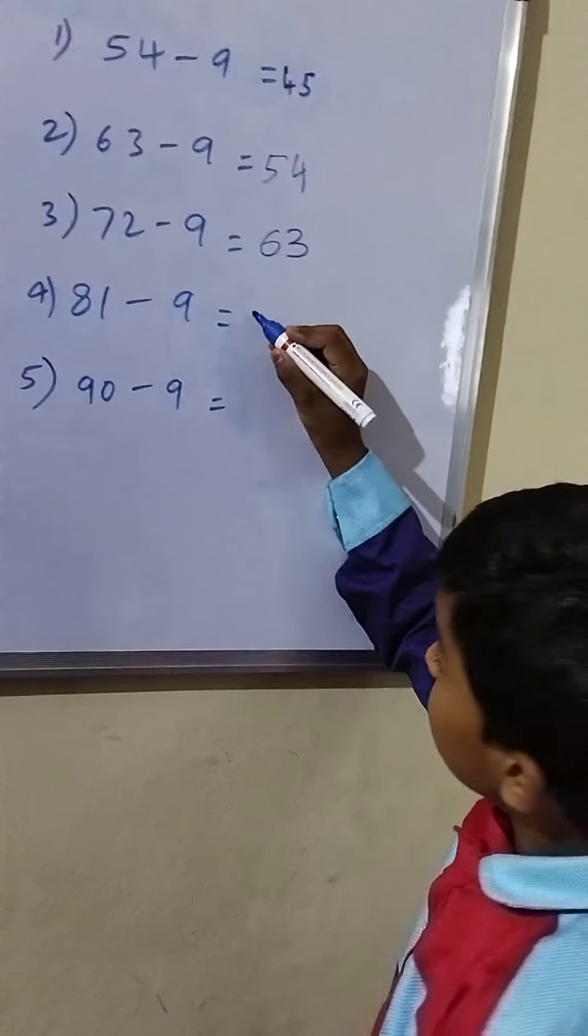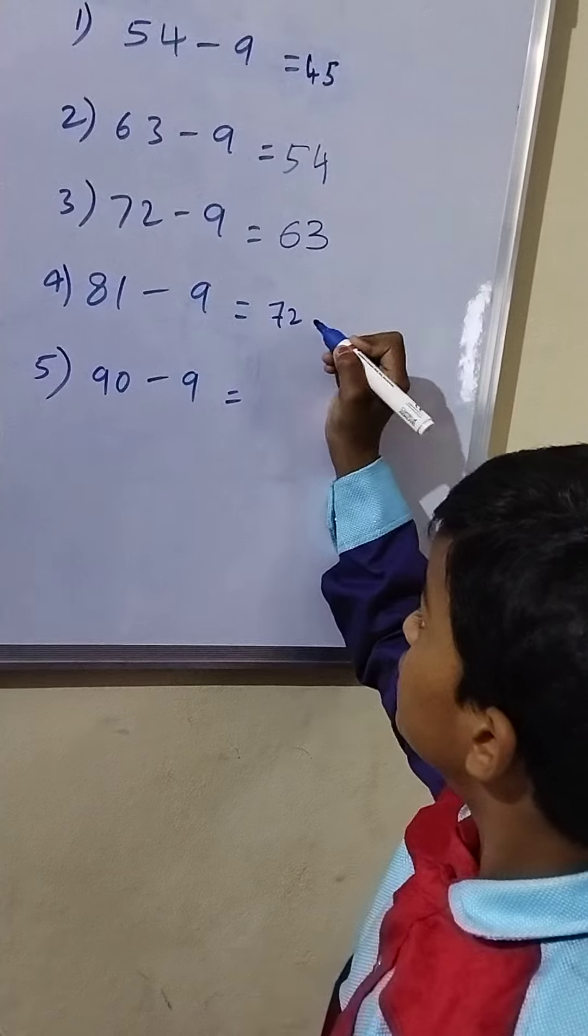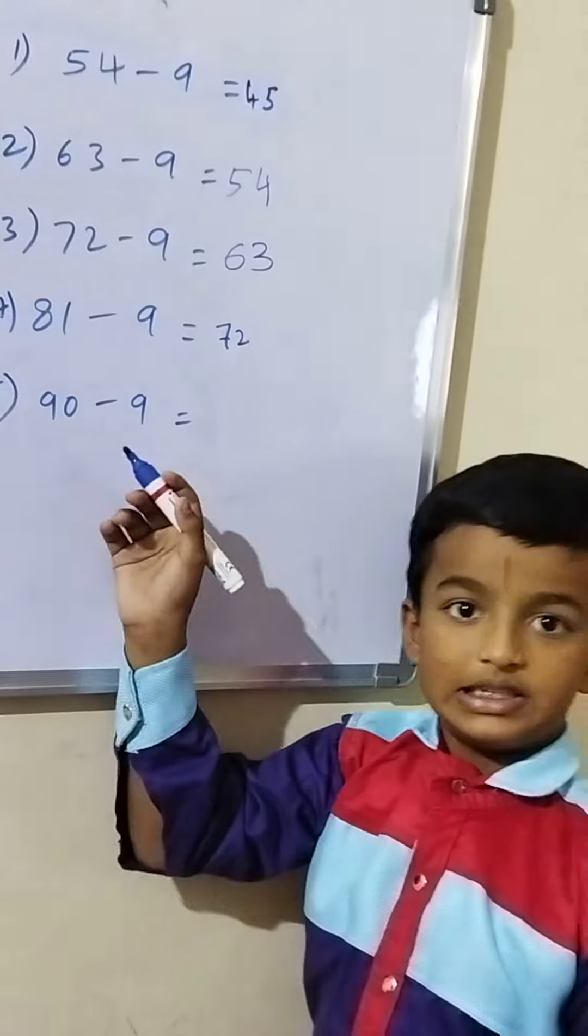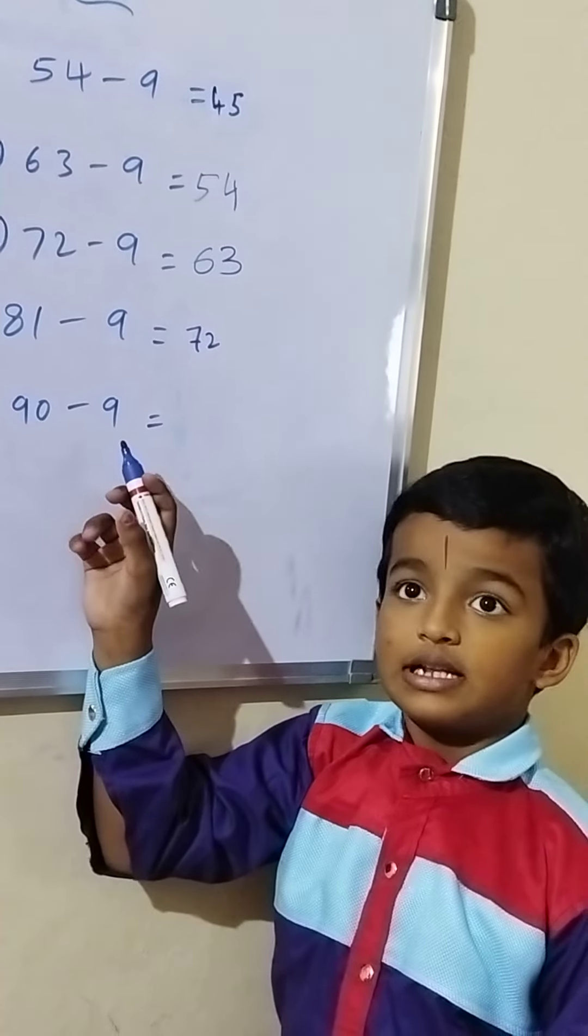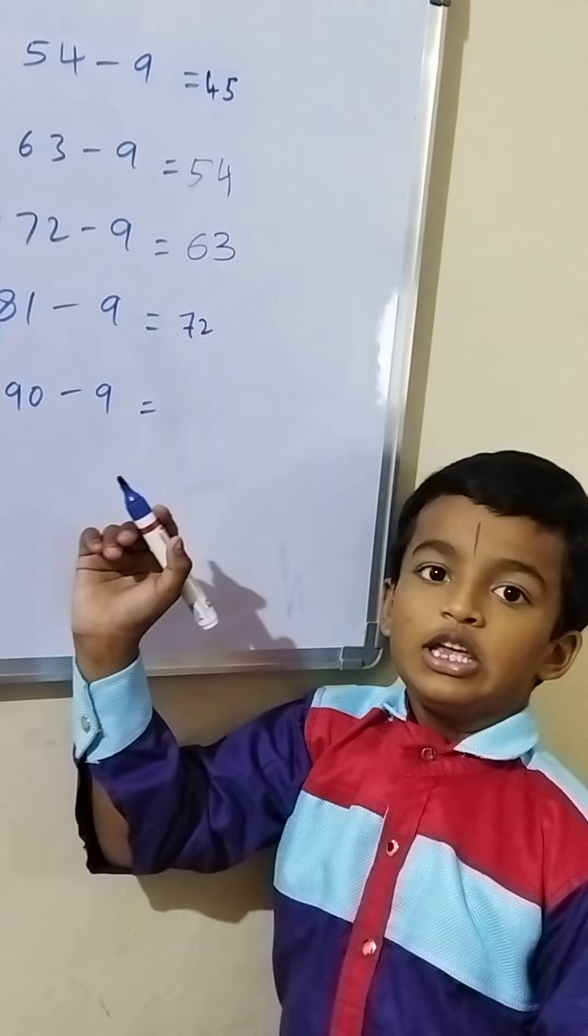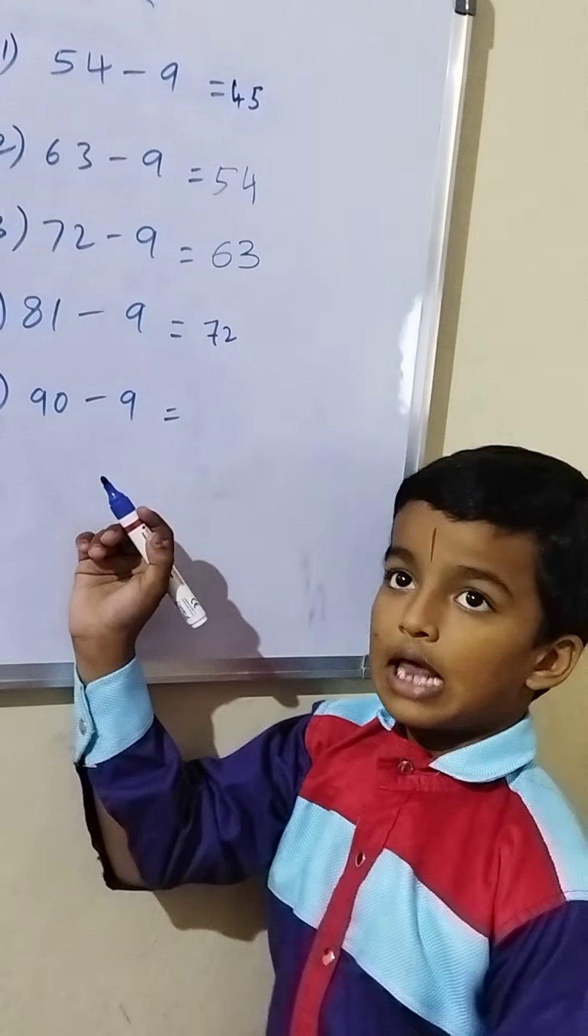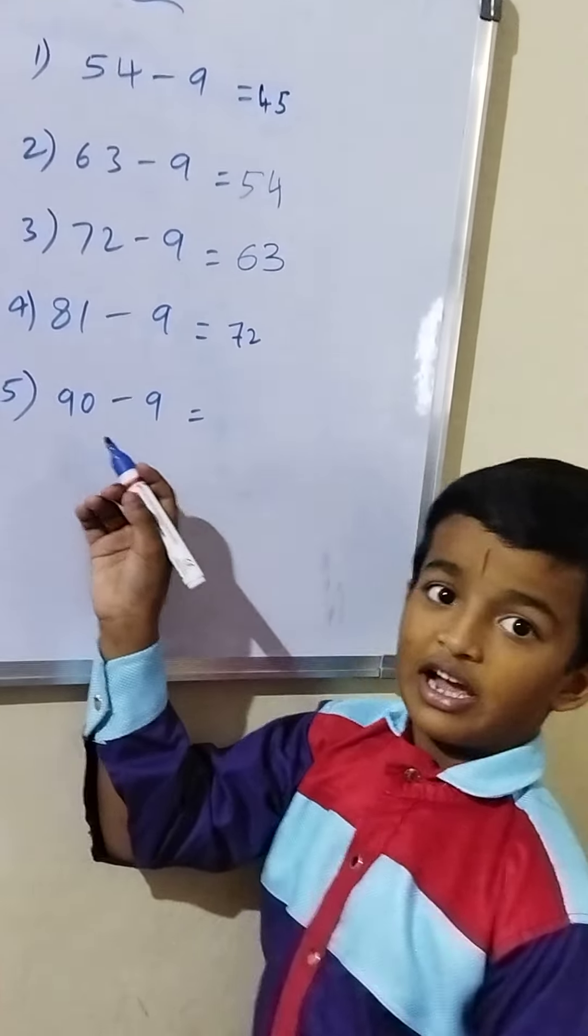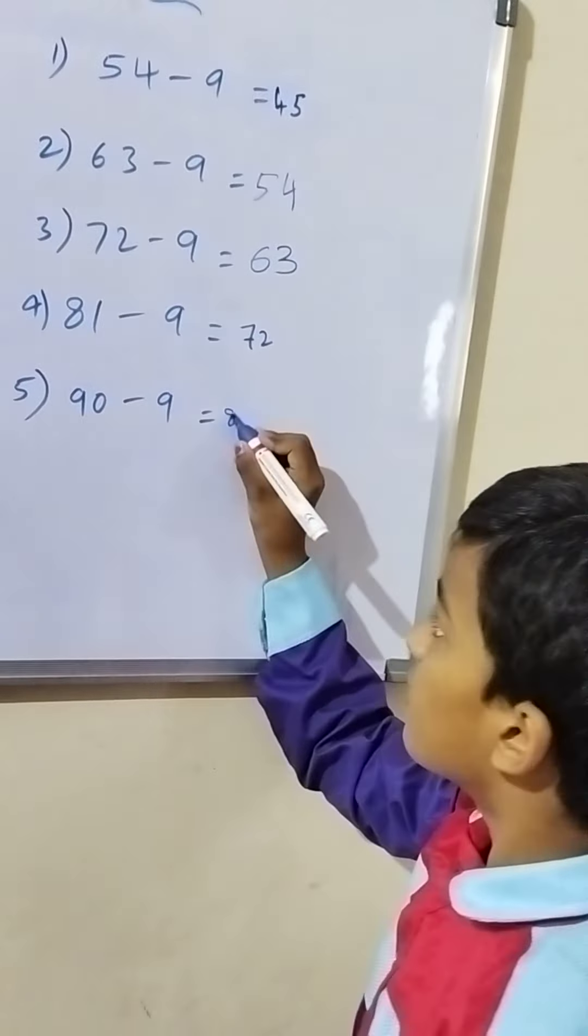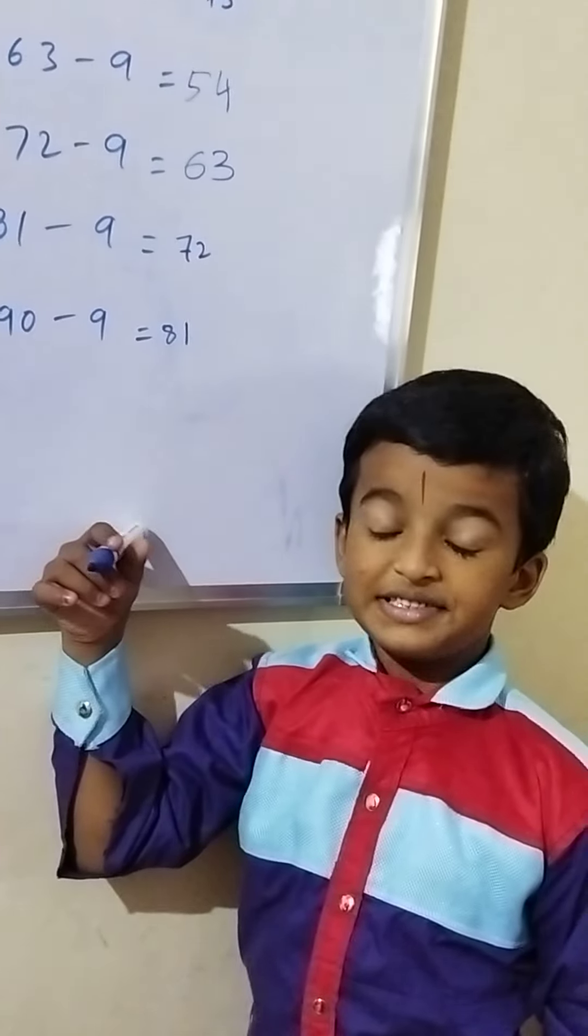81 minus 9: 90 minus 9, subtract 10 to get 80, add 1 to get 81. Thank you for listening.